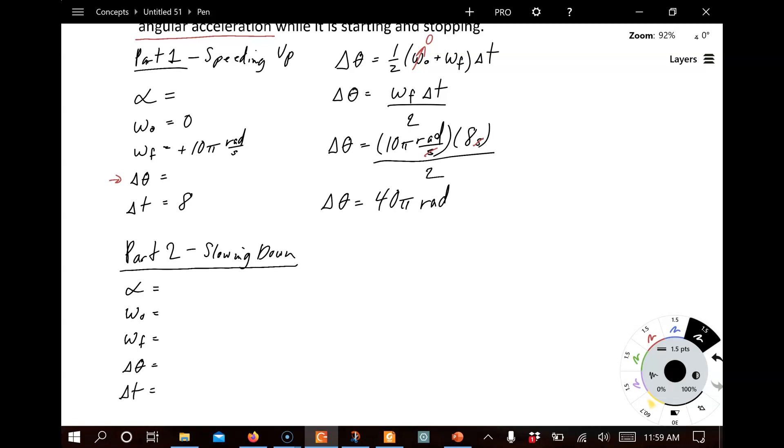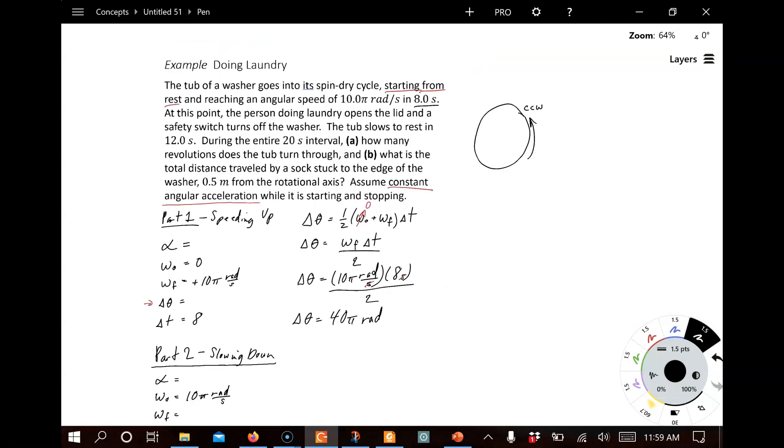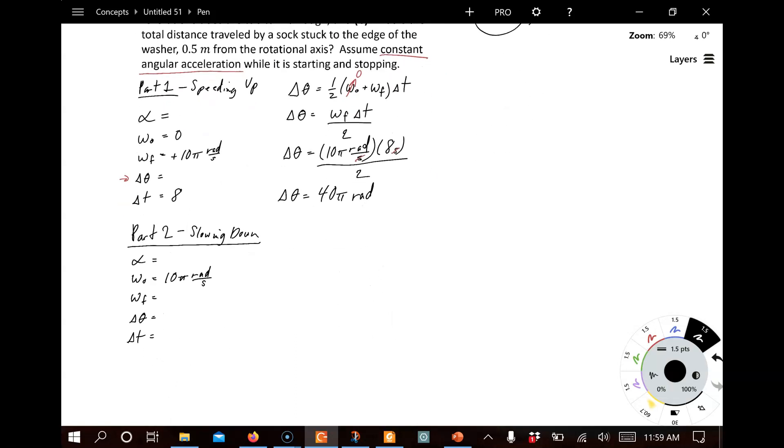And since this happens immediately after part one, the final values for part one, such as ω_final, that becomes the initial value for part two. So, we start with 10π rad/s. And now, we're going to go for 20 seconds until it comes to rest. Well, that was not right. 12 seconds until it comes to rest, right? So, we have a time for the second part of 12 seconds.